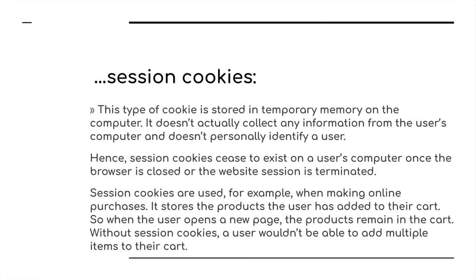Let's have a detailed breakdown of a session cookie. This type of cookie is stored in temporary memory on your computer. It doesn't collect any information from the user's computer and it doesn't personally identify the user. Session cookies cease to exist as soon as the computer or the browser window has been closed — the session is terminated. Session cookies are used, for example, when making online purchases. If you are on a shopping website and putting items in the basket, you don't want the basket to forget who you are every time you navigate elsewhere. That is the main reason for using a session cookie.